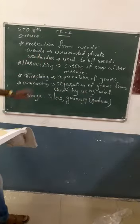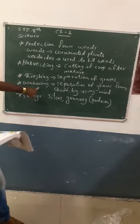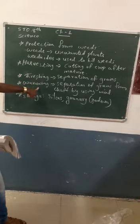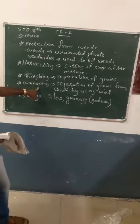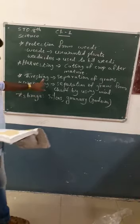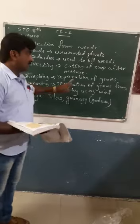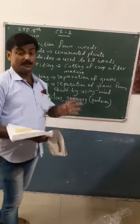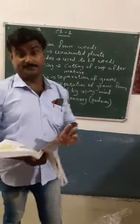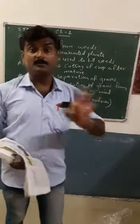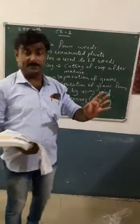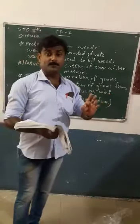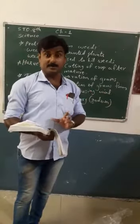For harvesting, methods like threshing and winnowing are used. What is threshing? The separation of grains from the stalks is called threshing.